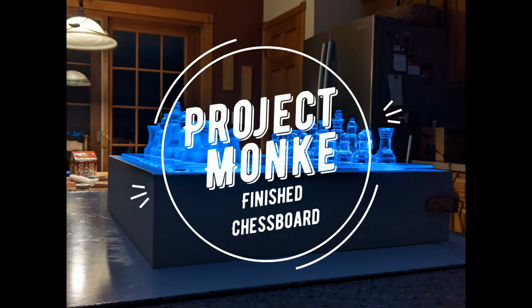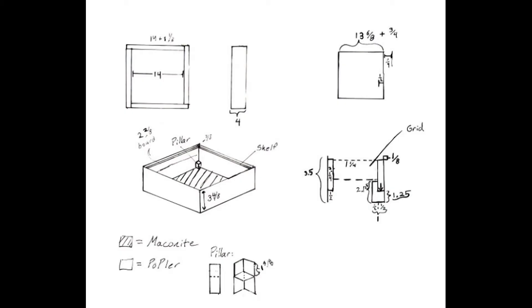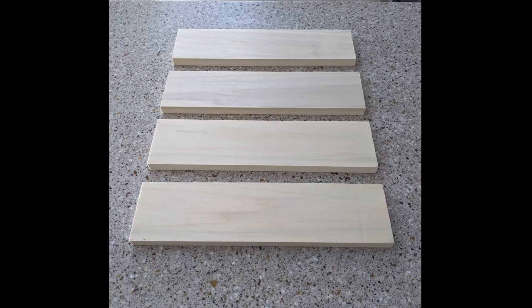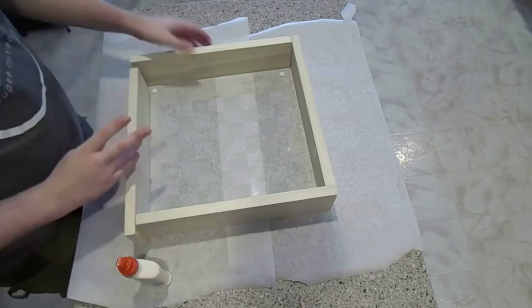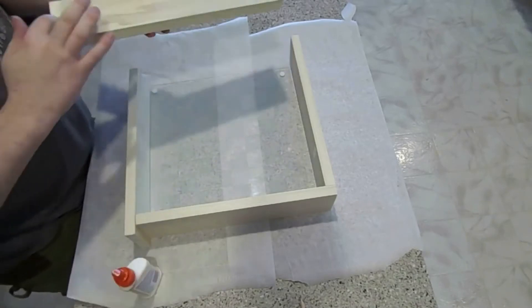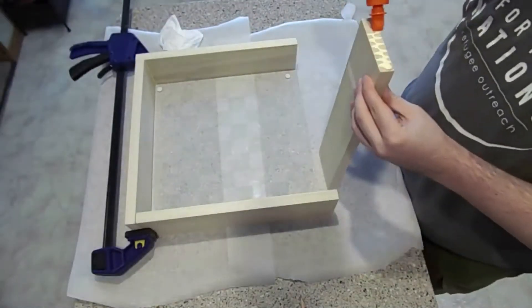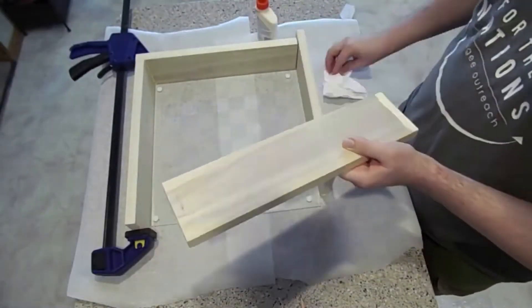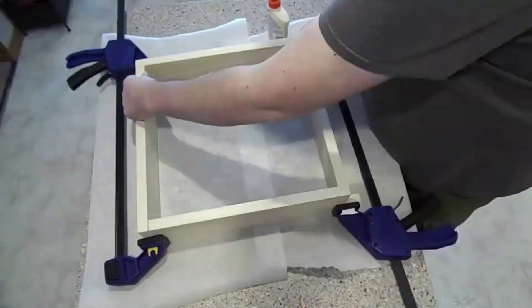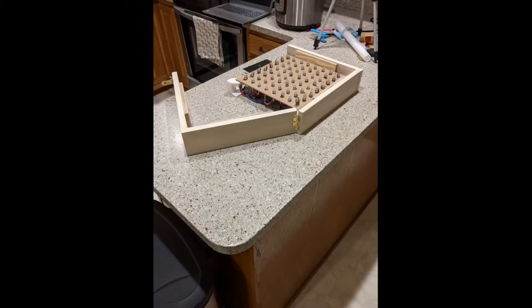Buckle your seatbelts and let's get this ball rolling. The first item on my agenda was to build a box around the chessboard and get those ugly hot wires just hidden away. For the box, I took four lengths of poplar wood and sanded them down with like six or seven different grits of sandpaper, and that just made it as smooth as a baby's bottom.